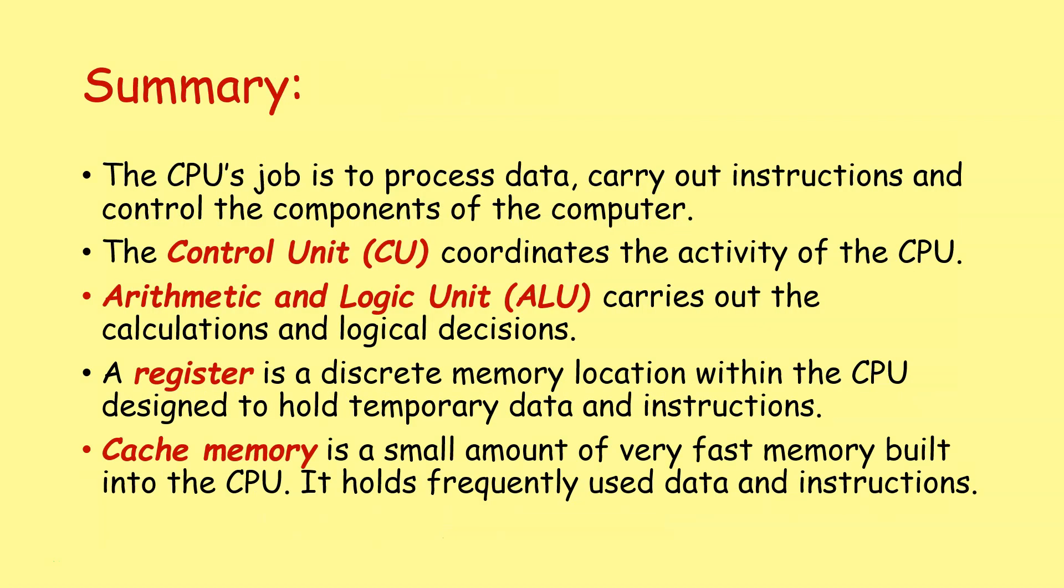Let's summarize today's lesson. The CPU's job is to process data, carry out instructions, and control the components of the computer. Key components that you need to know about inside the CPU include the control unit, which controls the activity of the CPU; the arithmetic and logic unit, which carries out all the calculations and logical decisions; registers, which are discrete memory locations within the CPU designed to hold temporary instructions and data; and your cache memory, which is a small amount of very fast memory built into the CPU, and it's used to hold frequently used data and instructions to kind of speed up the general operation of your computer.